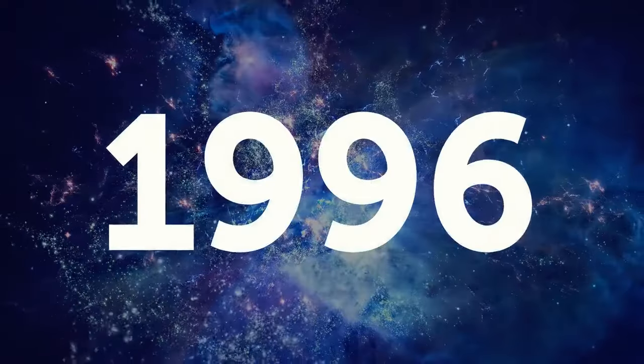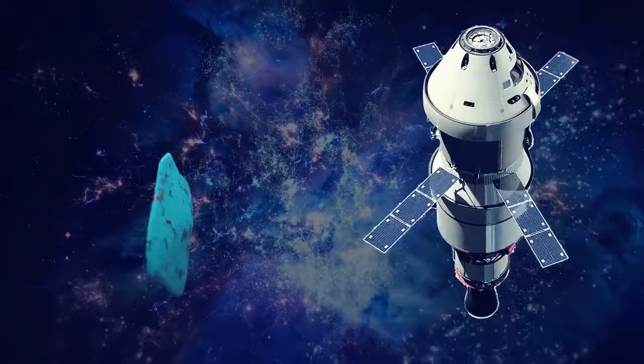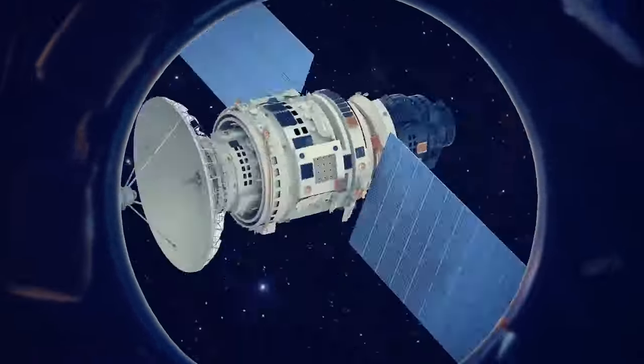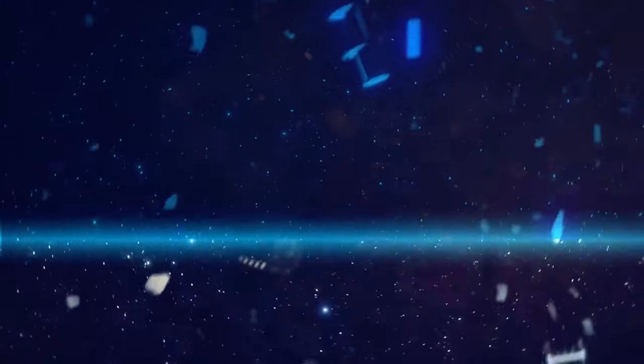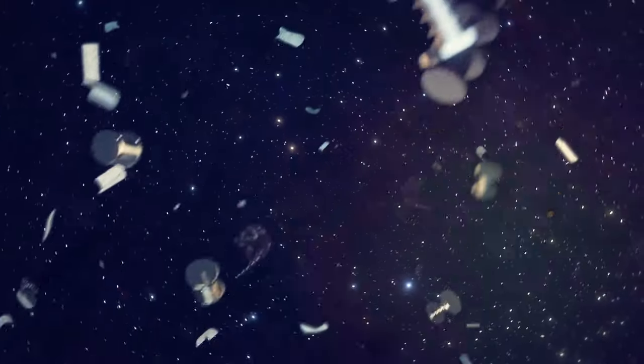For example, in 1996, a fragment of a rocket damaged 10 years earlier crashed into a French satellite. In 2009, a failed spacecraft destroyed another commercial ship. As a result of the collision, about 2,300 tracked fragments appeared, as well as lots of tiny untracked ones.